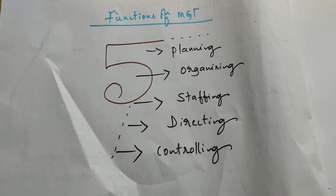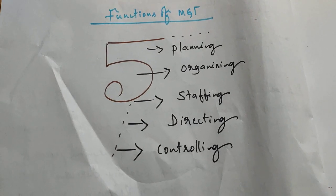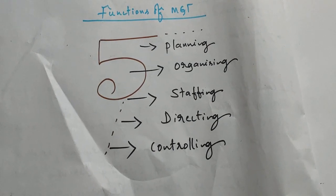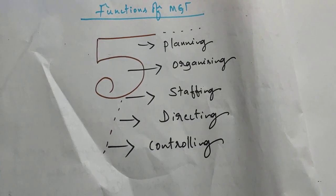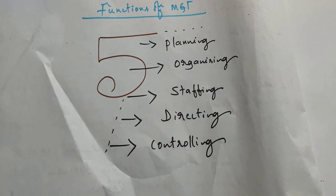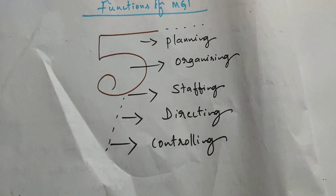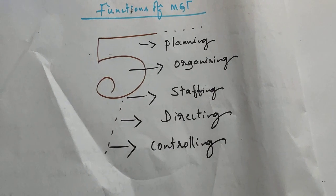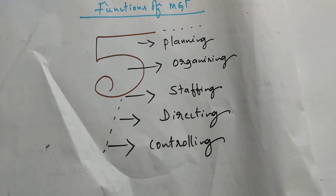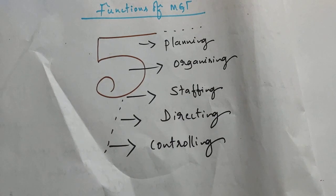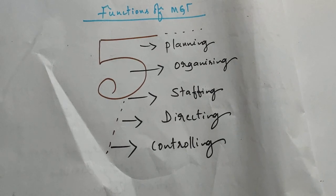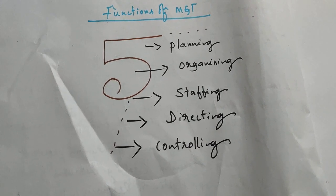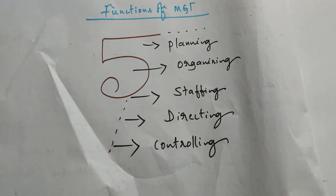Management is not only for business — we use management everywhere, in our day-to-day activities. For example, in a family function, we plan for the function, we organize required things, we need people to execute it, we give directions about how to execute, and finally we control by measuring the performance. We use management in all sectors of the economy, in all fields, in each and every activity of business — to accomplish a task within a given time and budget.